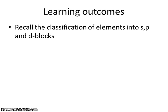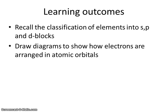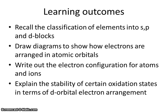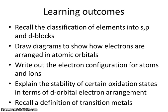You'll first revise the idea of how the periodic table is divided up into different blocks. You'll show how electrons are arranged in atomic orbitals by drawing diagrams, electrons in boxes. You'll be able to write out shorthand versions of the electron configuration for atoms and ions in the d-block. You'll look at certain oxidation states of ions in the d-block and explain why they are particularly stable. And finally, you'll also define transition metals in terms of their electron configurations.